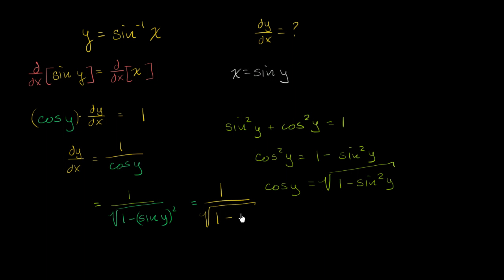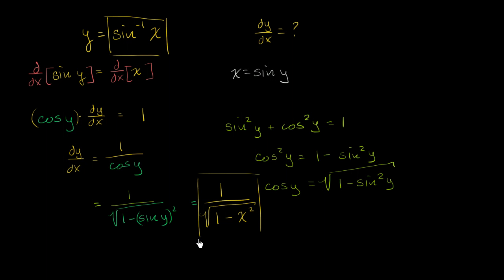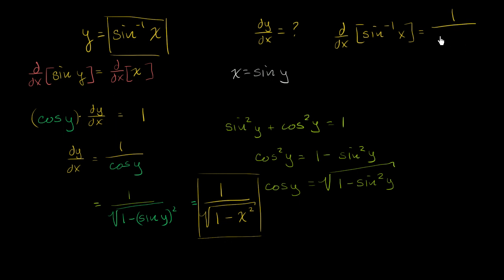One over the square root of one minus — instead of sine of y, we know that x is equal to sine of y — so one minus x squared. And so there you have it. The derivative with respect to x of the inverse sine of x is equal to one over the square root of one minus x squared. If you take the derivative with respect to x of both sides, you get dy/dx equal to one over the square root of one minus x squared.